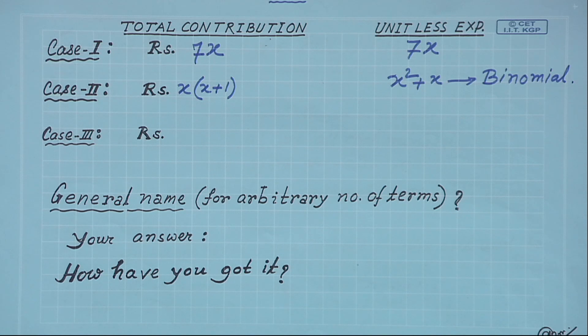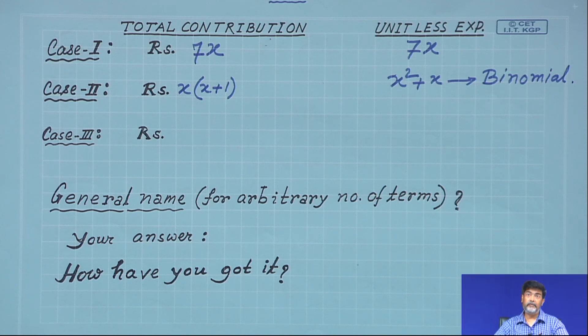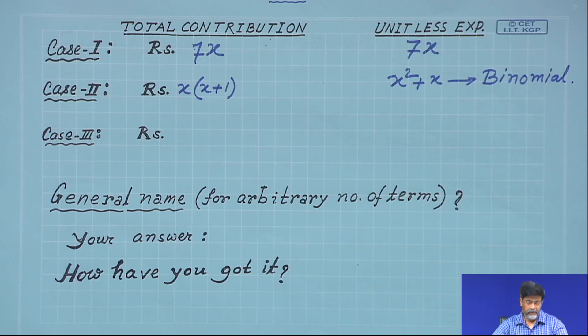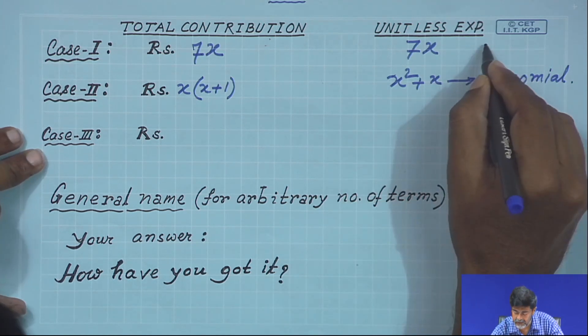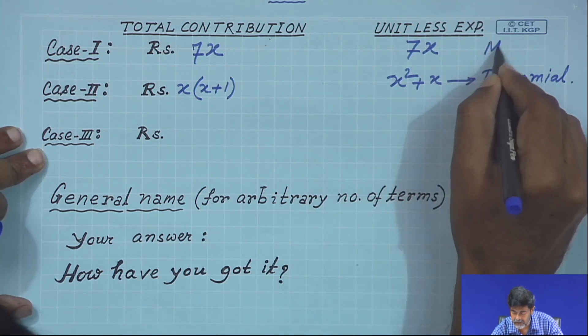Then can you guess the name of the first one, that is 7x? It is monomial — mono stands for 1. Monomial.